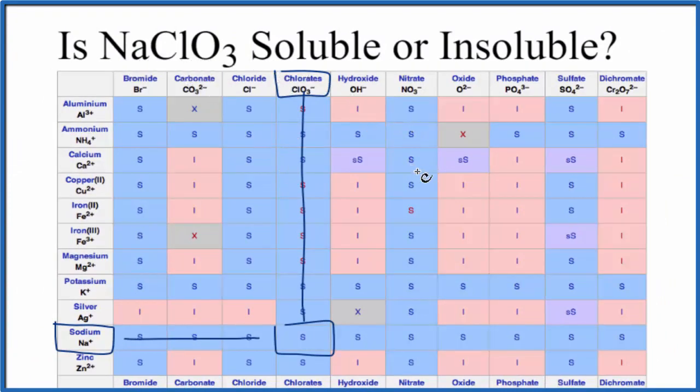There's one more way we can do this. We could just get some sodium chlorate, put it in water, and see what happened. Based on the solubility rules and the chart here, we would expect that it would dissolve and dissociate into its ions.